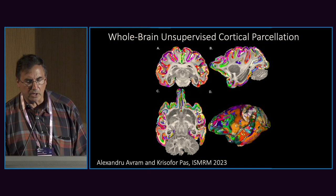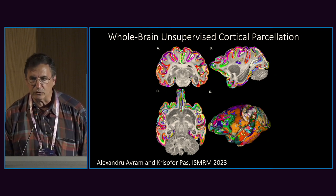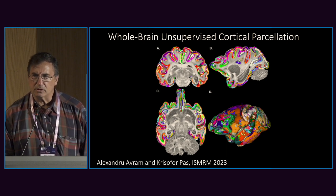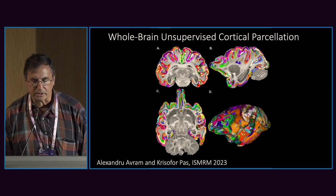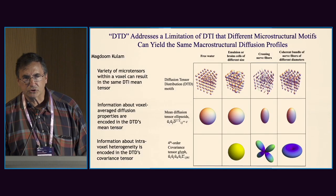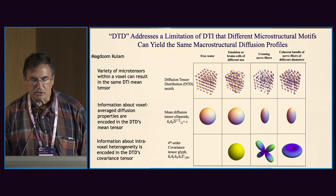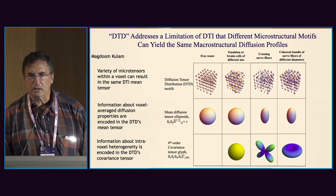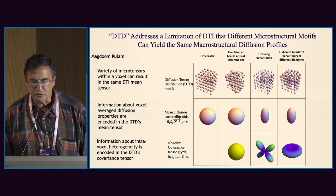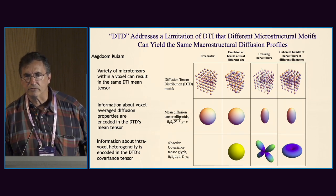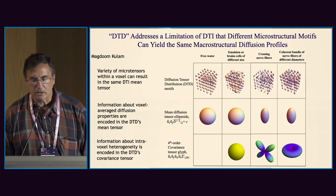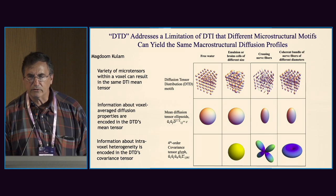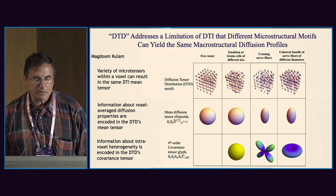One of our goals is to do unsupervised cortical parcellation. Work by Alexandru Avram and one of our students, Christopher Pass, aims to do subject-by-subject cortical parcellation without using an atlas. Another way in which we do microstructure imaging — drilling into the voxel — is to go beyond diffusion tensor imaging, which provides only an aggregate or mean description of diffusion within a voxel. Now we use a distribution of tensors within a voxel to cover the heterogeneity that may exist, including white matter, gray matter, cerebrospinal fluid, crossing fibers, and other types of components that make up the voxel, and we'd like to be able to disambiguate those.